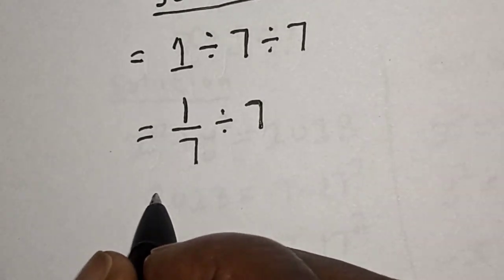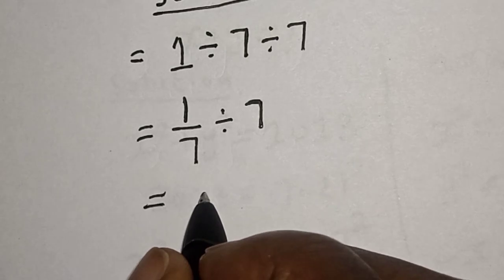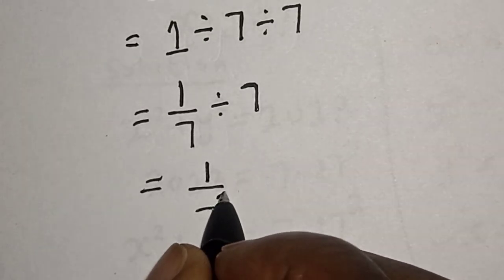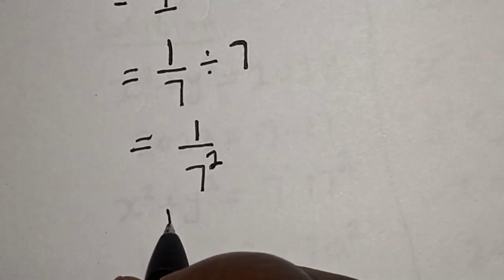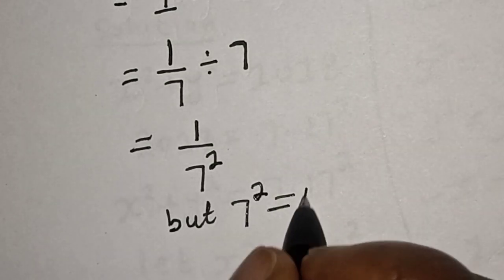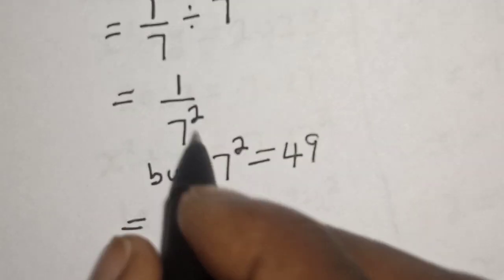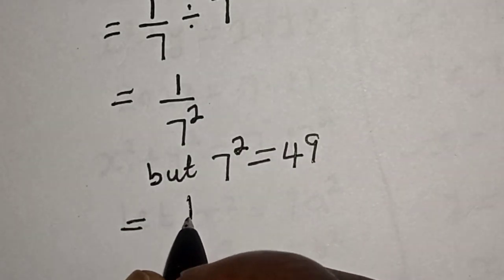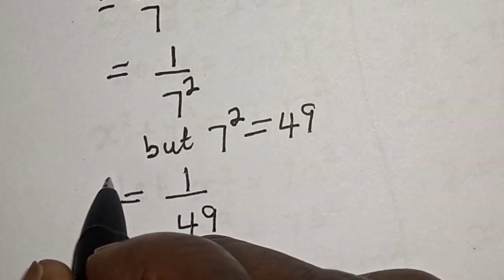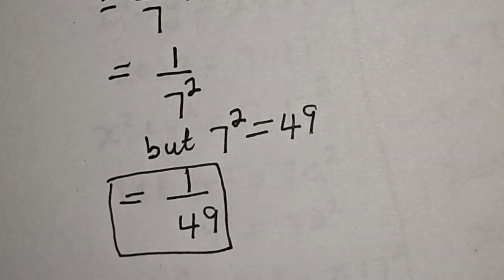If you have one divided by seven divided by another seven, this is equal to one divided by seven squared. Seven squared is equal to forty-nine, therefore one divided by seven squared is equal to one over forty-nine, and that is our final answer.